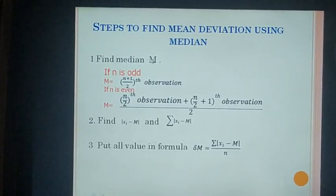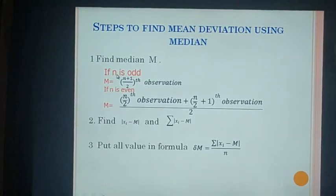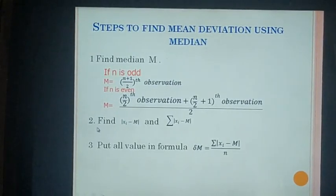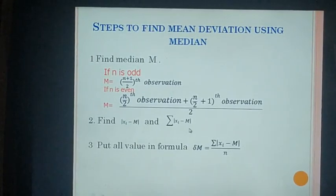Steps to find mean deviation using median: First, find the median by arranging observations in ascending order. If the number of observations is odd, the median is the (n+1)/2 th observation. If even, M = [(n/2 th observation) + (n/2 + 1 th observation)] / 2. Next, find |xi − M| and Σ|xi − M|, then apply the formula δM = Σ|xi − M| / n.